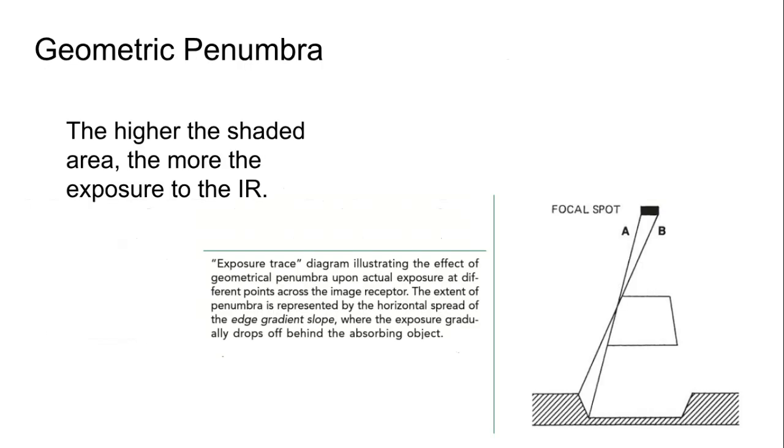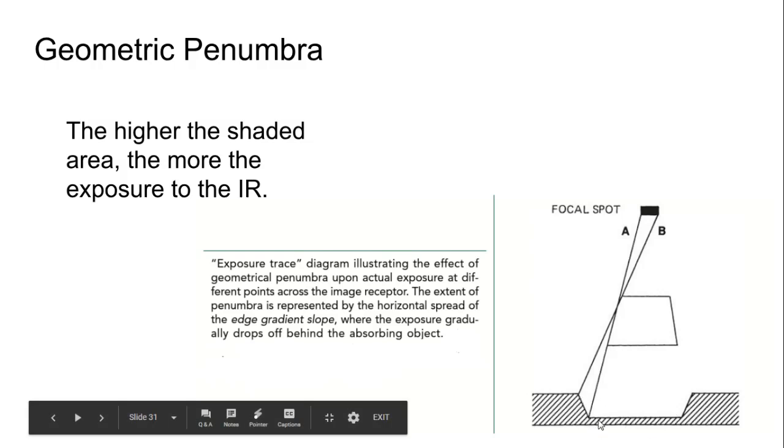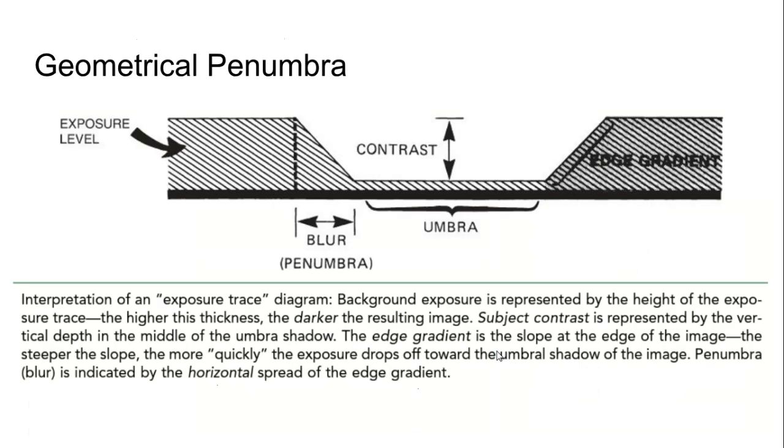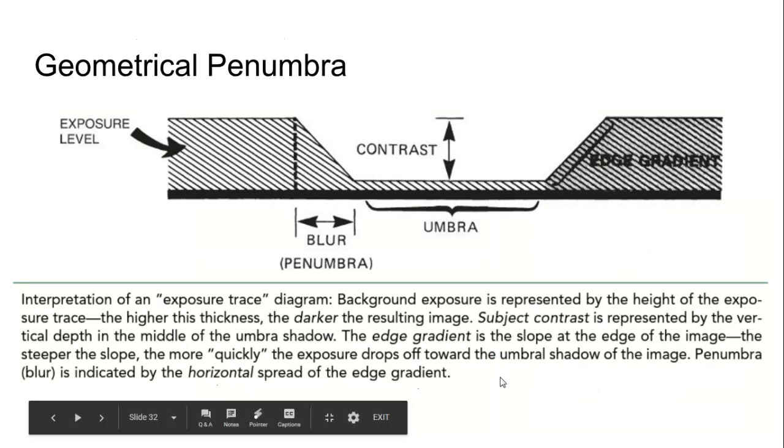So what is geometric penumbra, right? So there are a few of these, what's known as exposure trace diagrams, and there are several parts of them that are related to the actual exposure, that are related to the spread of penumbra, which is an indication of spatial resolution going up or down. So we'll define this better on the next slide, but we're going to be looking at the slope and the angles of these areas in here. So this is a better example of what we're talking about.